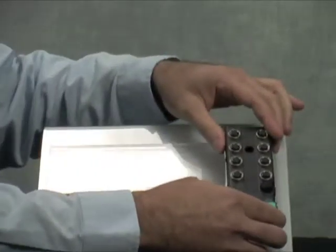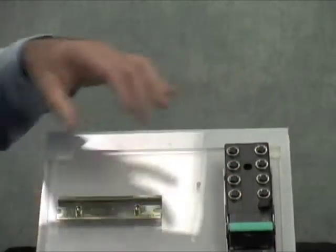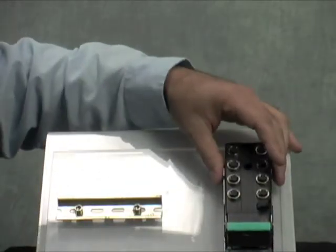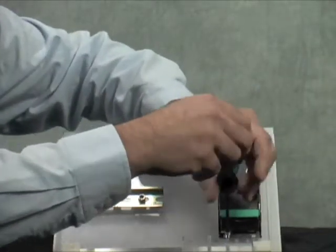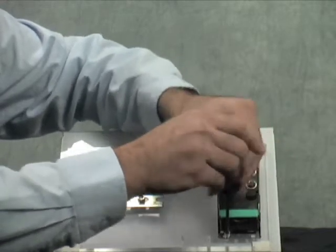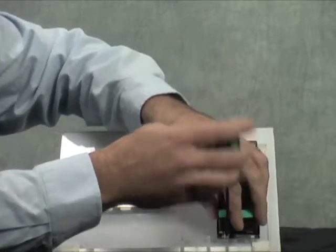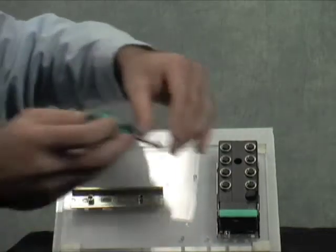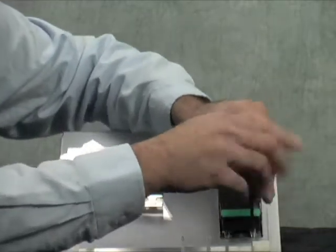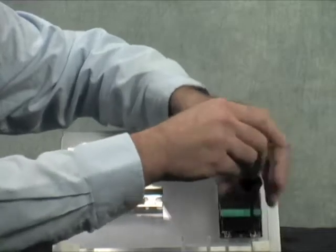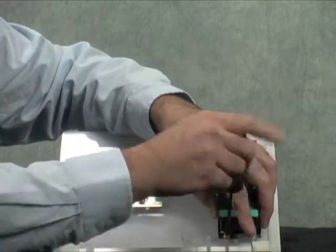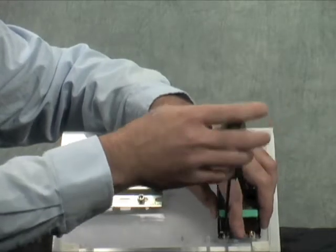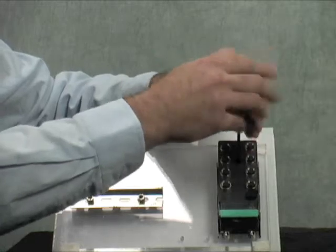I'm going to start by mounting the G12 module with the mounting screws. I'm going to pre-start the first screw and then lay the module in and then go ahead and finish installing the bottom two screws. Once the bottom two screws are tight, I can go back and tighten the screw in the middle.